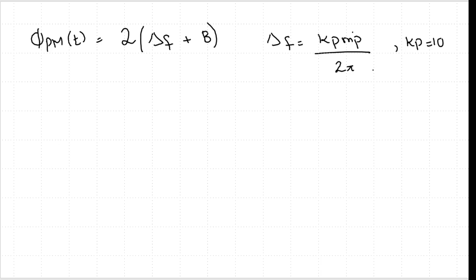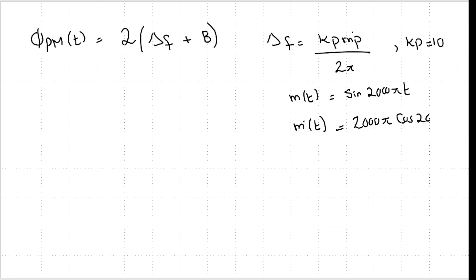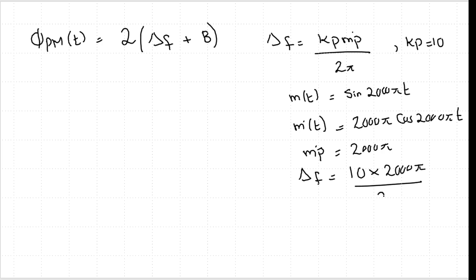Since m(t) = sin(2000πt), its derivative is m'(t) = 2000π·cos(2000πt). The maximum value of this derivative, mp_bar, occurs when cos(2000πt) = 1, giving mp_bar = 2000π. So Δf = kp·mp_bar / (2π) = 10 × 2000π / (2π). The π cancels and the 2s cancel, giving Δf = 10 × 1000 = 10,000 Hz, or 10 kHz.